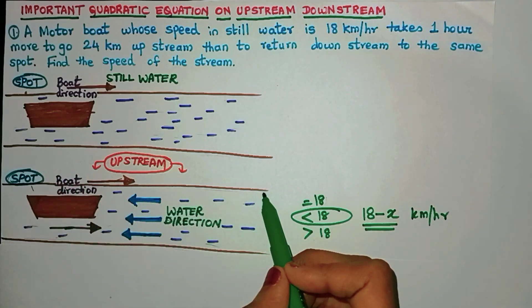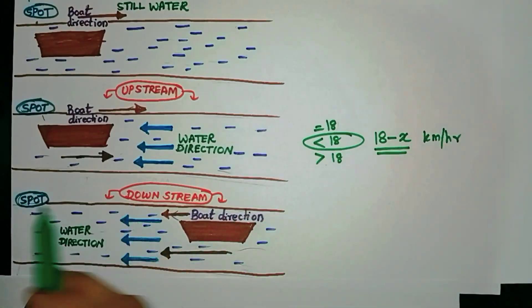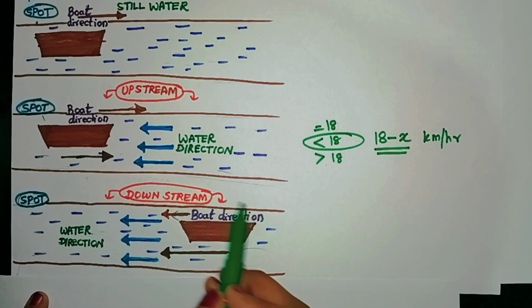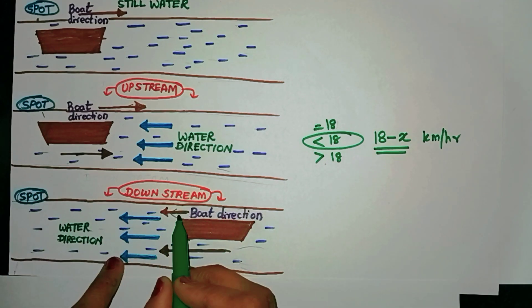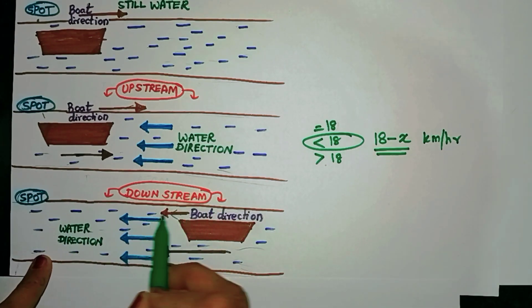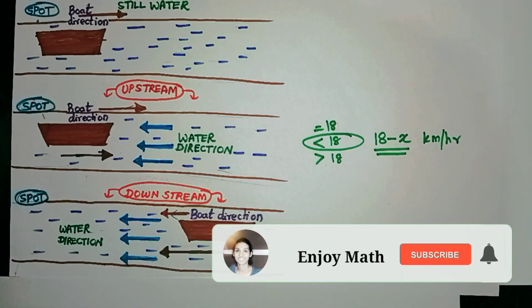In this way, the boat reaches 24 kilometers and then it has to return to the same spot. The boat's direction has changed. Now, the direction of the boat and the direction of the water are both the same. This is known as downstream.